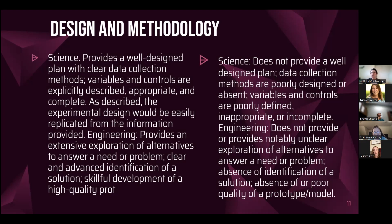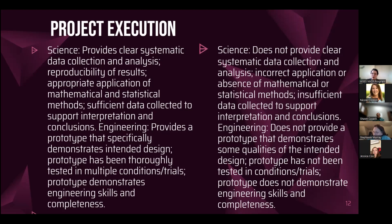Design and methodology has a weight of three. At a five for science, it provides a well-designed plan with clear data collection methods; variables and controls are explicitly described, appropriate, and complete; the experimental design would be easily replicated. For engineering at a five, it provides extensive exploration of alternatives, clear identification of a solution, and skillful development of a high-quality prototype. Project execution has a weight of four. For science at a five: clear systematic data collection and analysis, reproducibility of results, appropriate mathematical and statistical methods, and sufficient data to support interpretation and conclusions. For engineering at a five, the prototype specifically demonstrates the intended design, has been thoroughly tested in multiple conditions and trials, and demonstrates engineering skills and completeness.